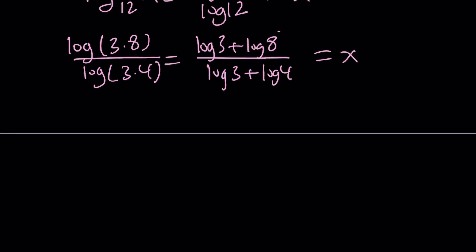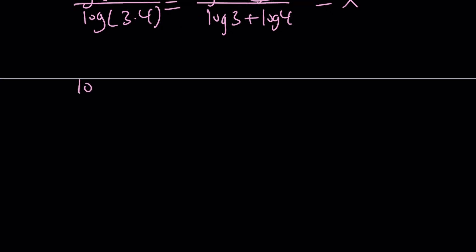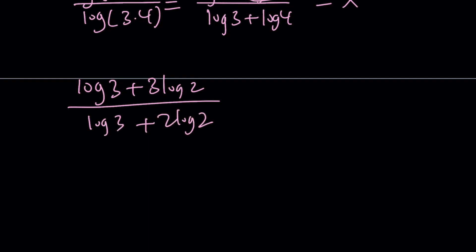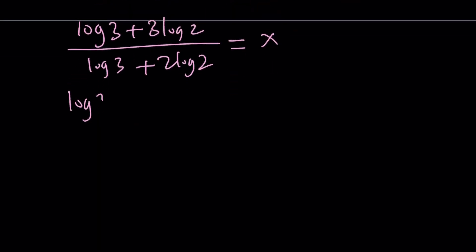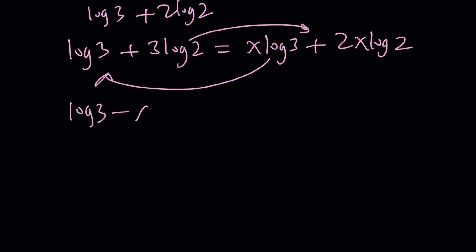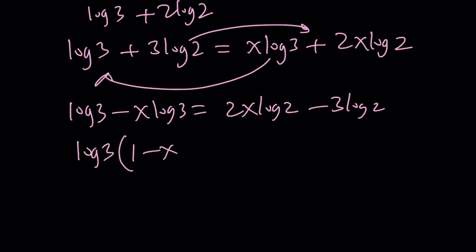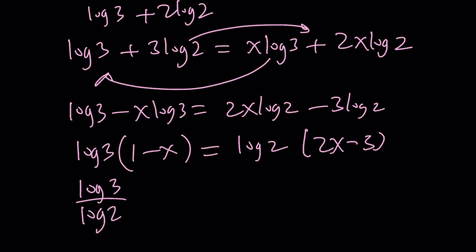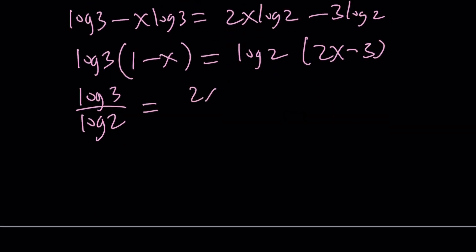Since log 8 can be written as 2 to the third power and log 4 as 2 to the second power, we get log 3 plus 3 log 2 divided by log 3 plus 2 log 2 equals x. Now I'm going to cross-multiply, giving x log 3 plus 2x log 2. Bringing log 3 terms together and log 2 terms together gives us log 3 minus x log 3 equals 2x log 2 minus 3 log 2. Factoring out log 3 gives 1 minus x, and factoring out log 2 gives 2x minus 3. Dividing both sides by log 2 and by 1 minus x, we get log 3 over log 2 equals 2x minus 3 over 1 minus x.